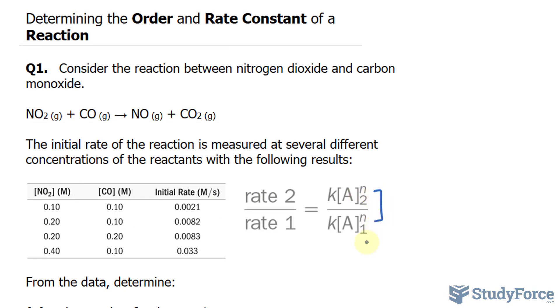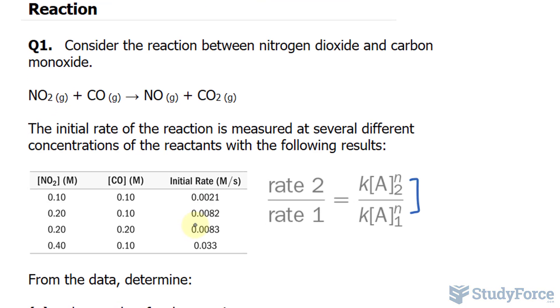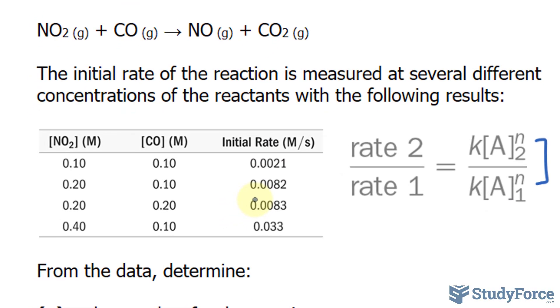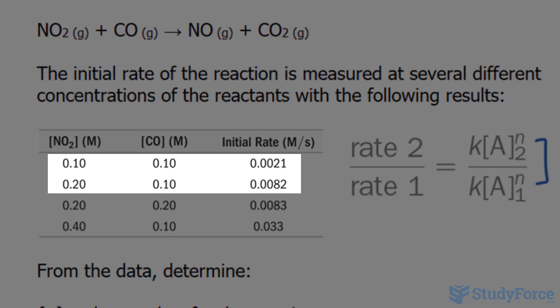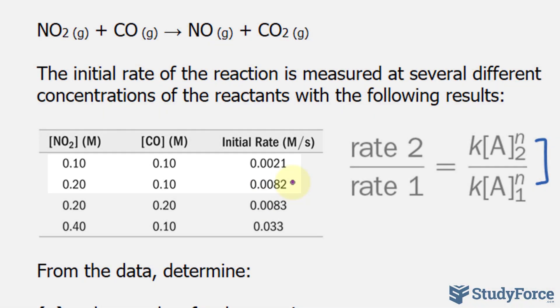We will pick any two of these initial rates to represent rate 2 and rate 1. For the reactant NO2, which is what we're starting with, use the first and second concentrations and rates because NO2 changes here, but CO, the other reactant, is constant.